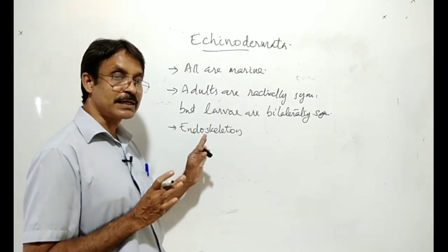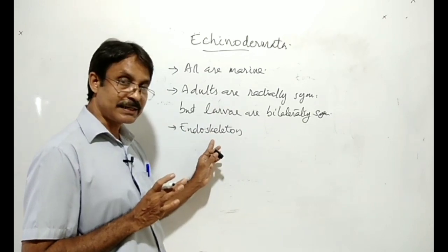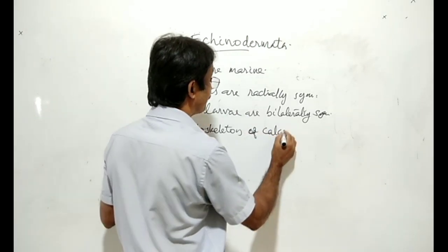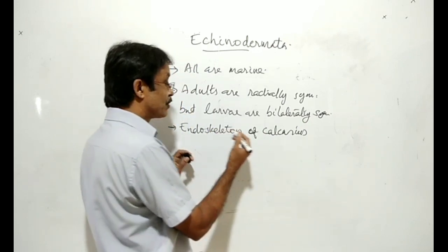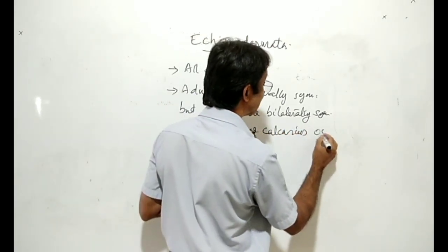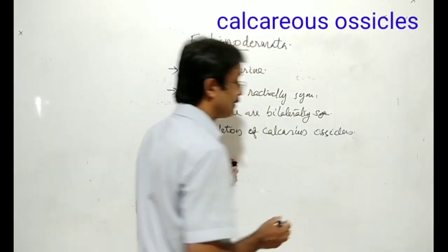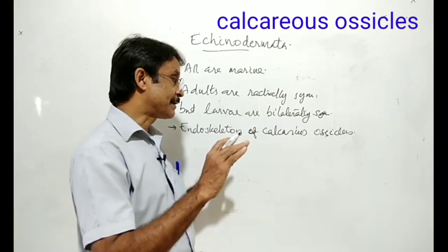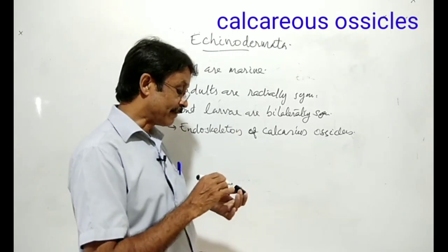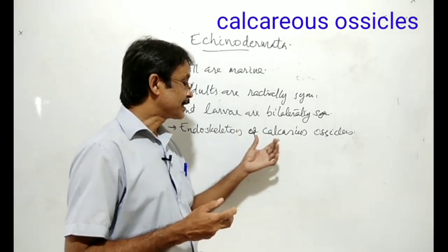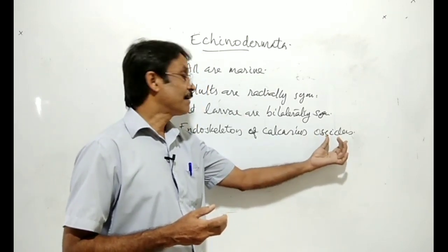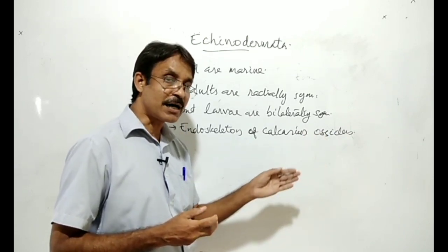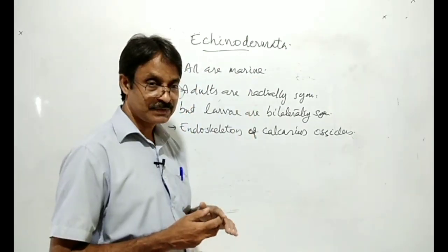Echinoderms have an endoskeleton. That endoskeleton is made up of calcium carbonate. So they have an endoskeleton of calcareous ossicles present in their skin. These calcareous ossicles are projecting from the skin outward.